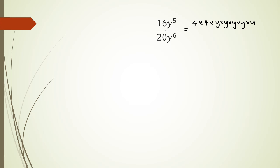And 20y to the power of 6 can be written as 4 times 5 and 6 y's. At this point I can cancel out my 4s because they're common factors, and then with the y's we've got 1, 2, 3, 4, 5. Basically this sums up: in the numerator I've got a 4, and in the denominator I've got 5y.